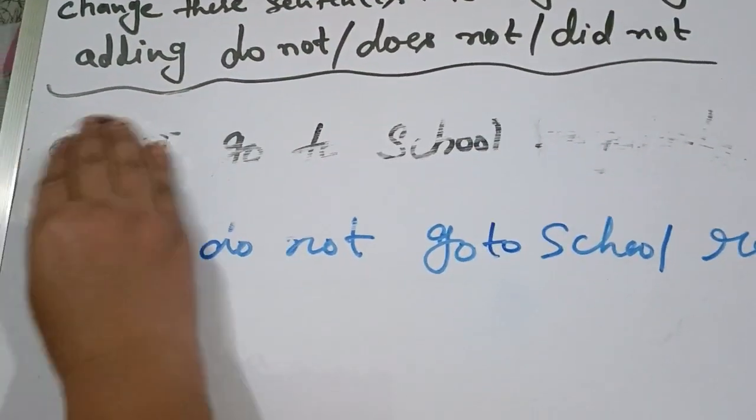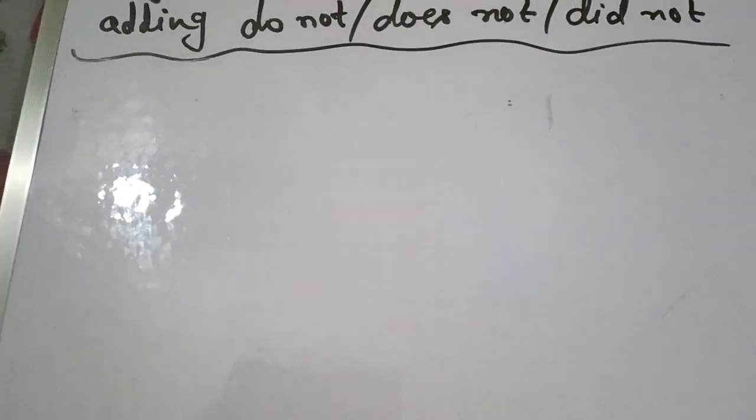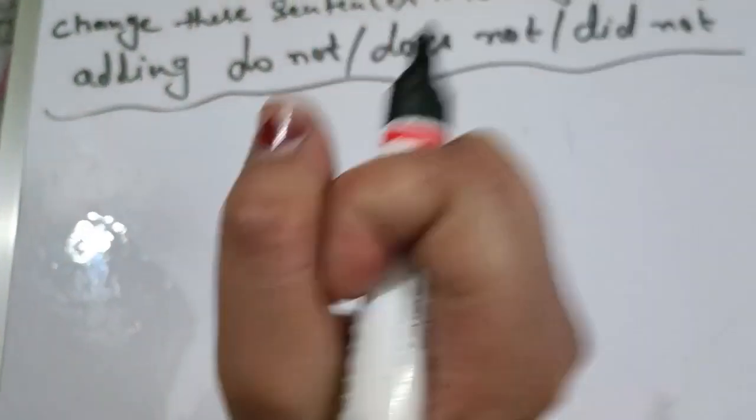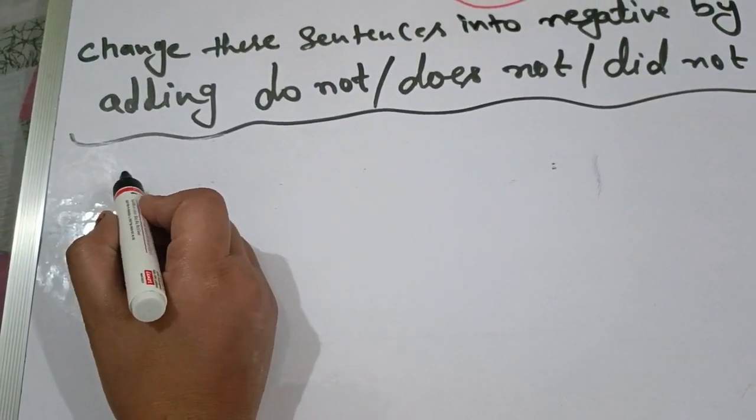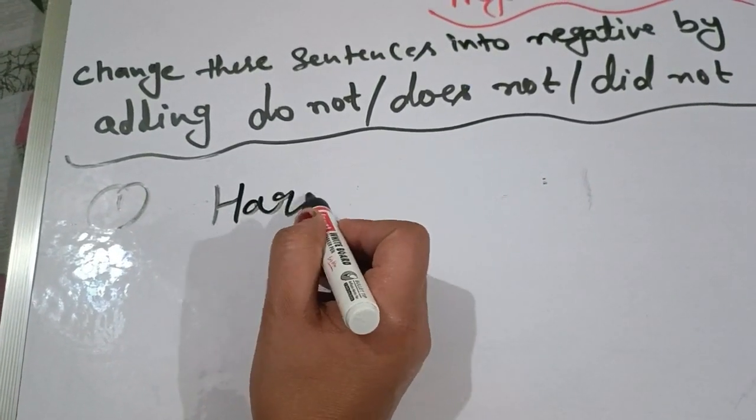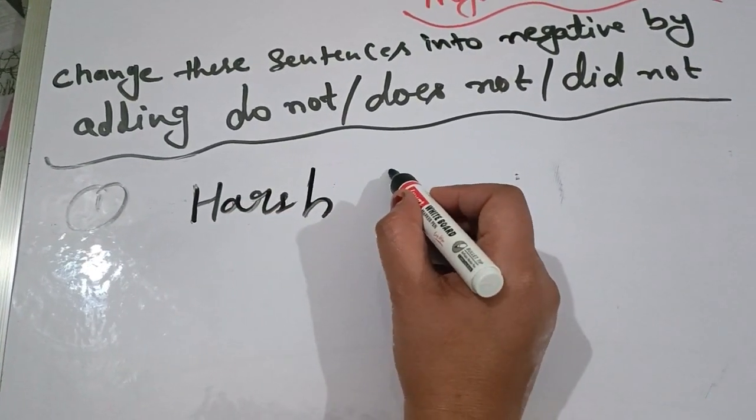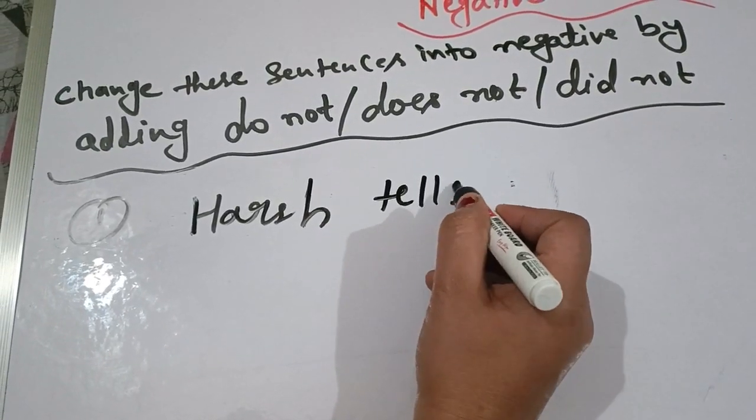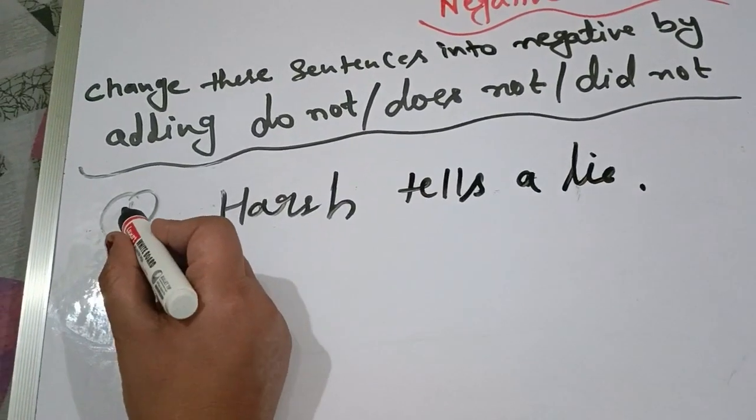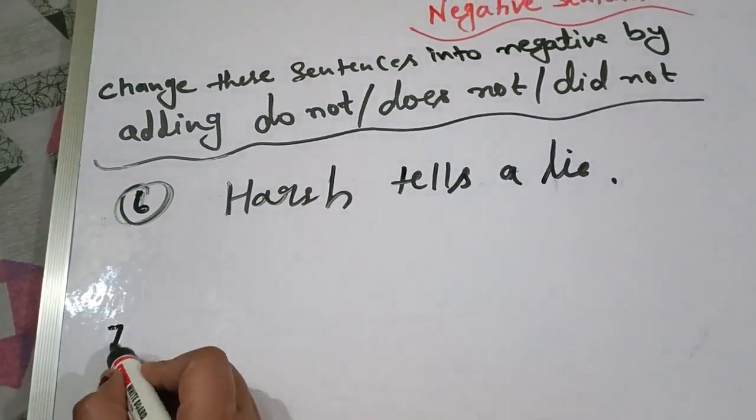Now I will give you examples for your homework. Keep it in the comments section. Harsh tells a lie. You will give this example. Let me give you number seven.